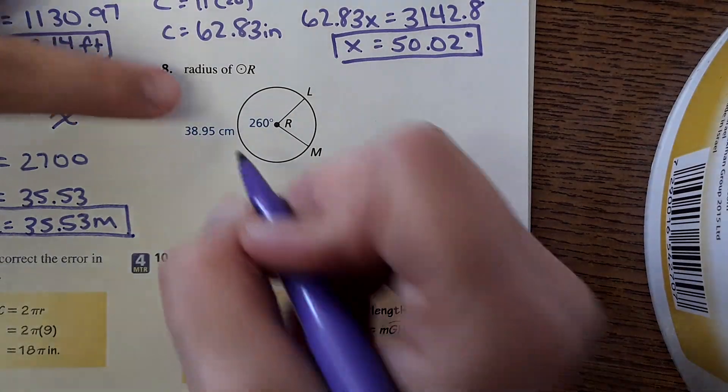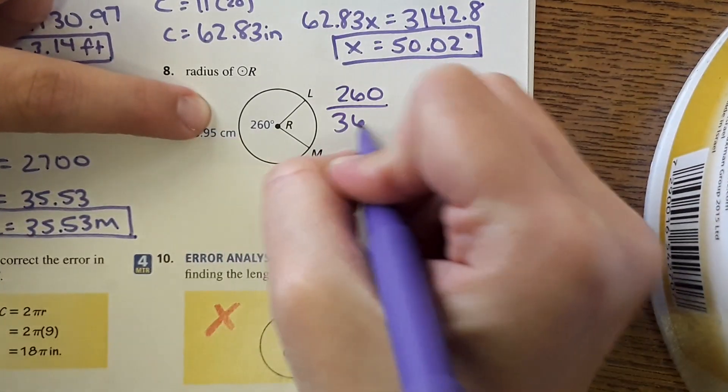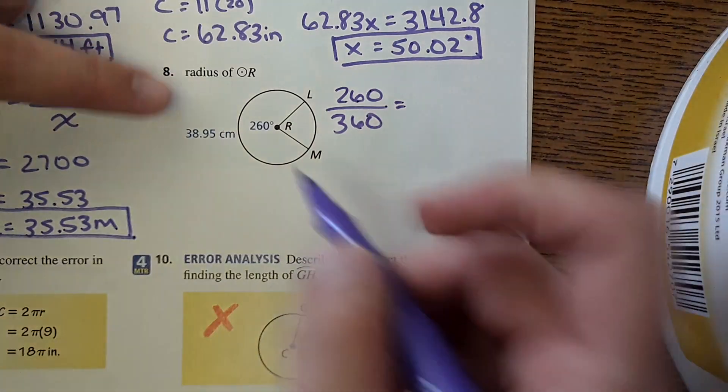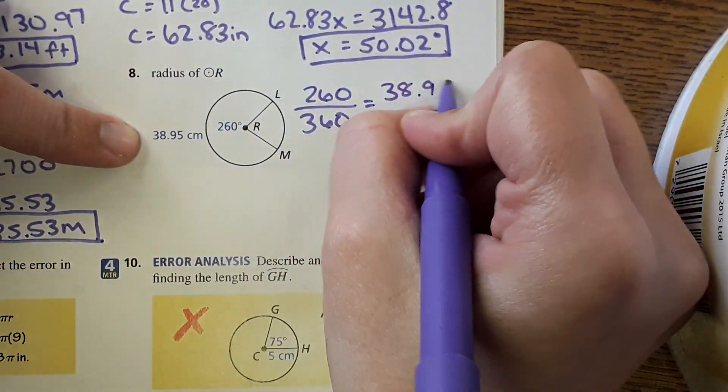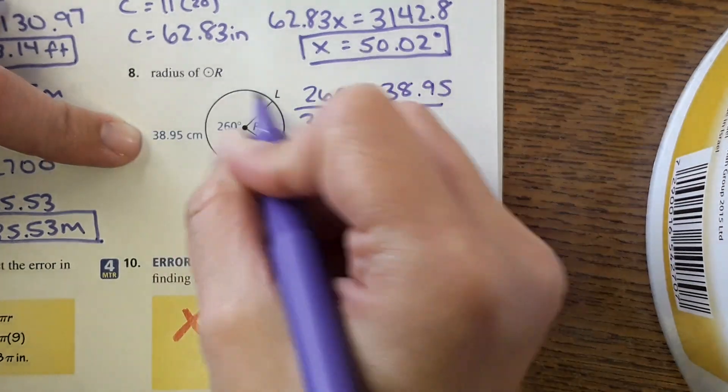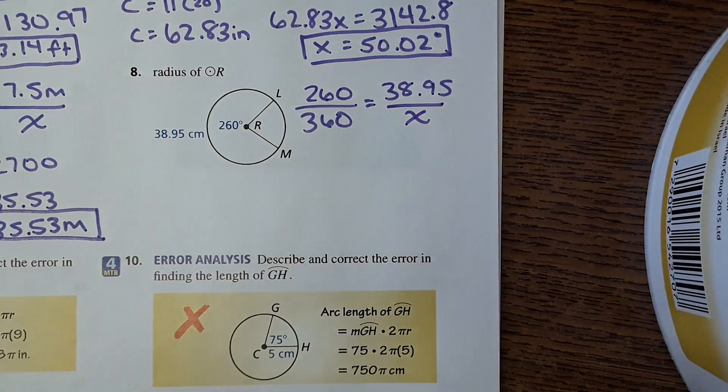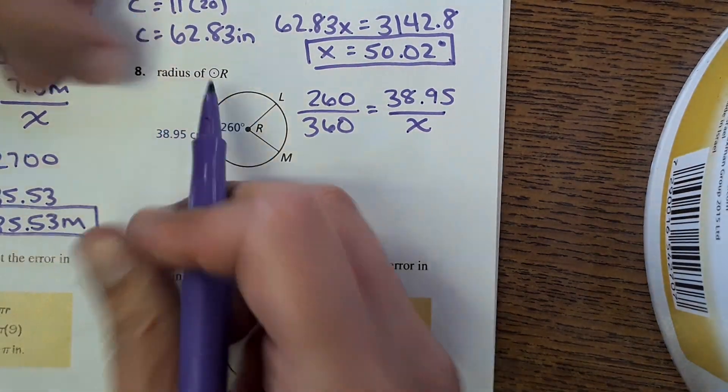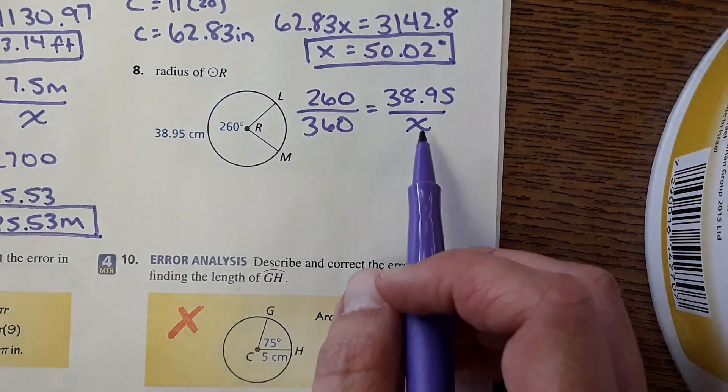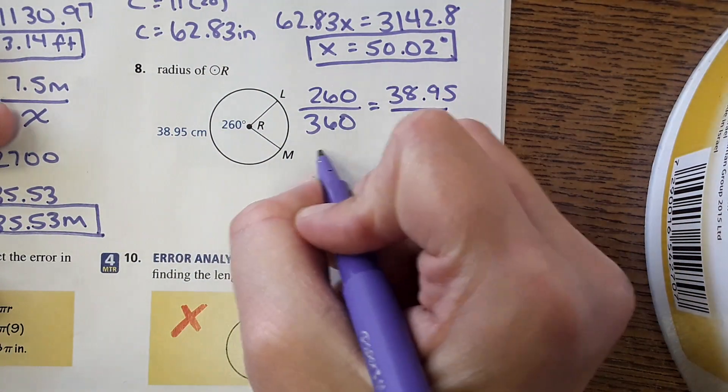So with number eight, 260 over 360 equals part 38.95 over the entire circumference which they do not give us. But they're asking for radius. So what we're going to do is solve for circumference and then work backwards to find radius. So using cross multiplication.